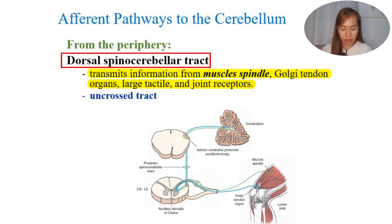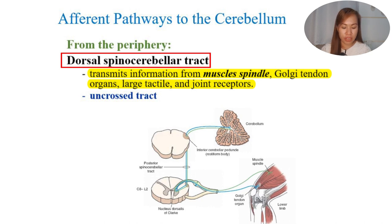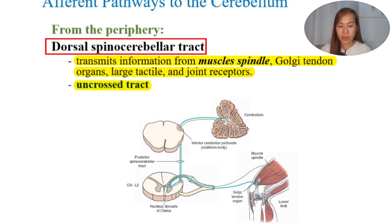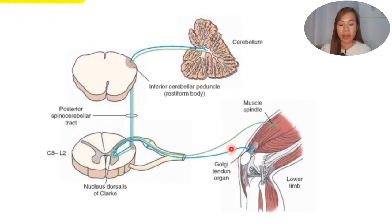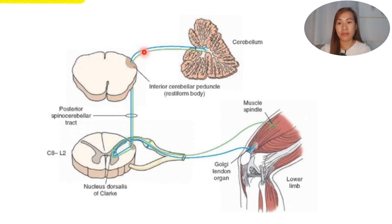The dorsal spinocerebellar tract tells the brain the momentary status of muscle contraction, muscle tension, limb position, and forces acting on the body surface — providing sensory information from muscles and tendons to the cerebellum. It is an uncrossed tract, meaning it does not cross to the other side of the body. If it arises from the left part of the body, the pathway travels ipsilaterally to the cerebellum and does not cross over, unlike the ventral spinocerebellar tract.